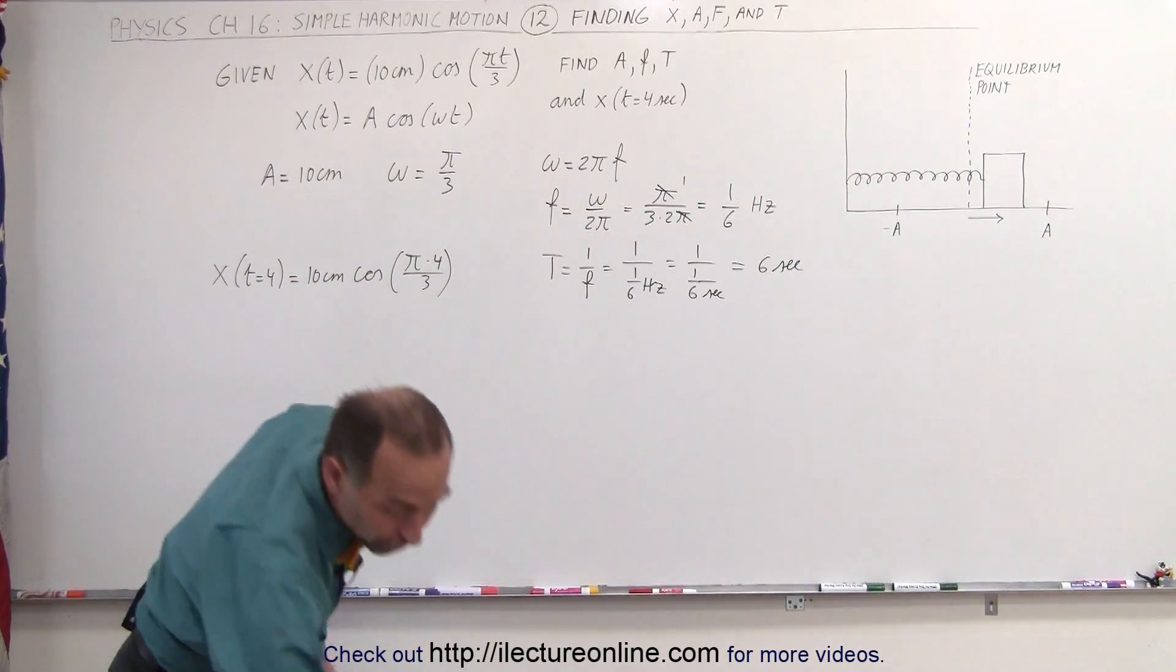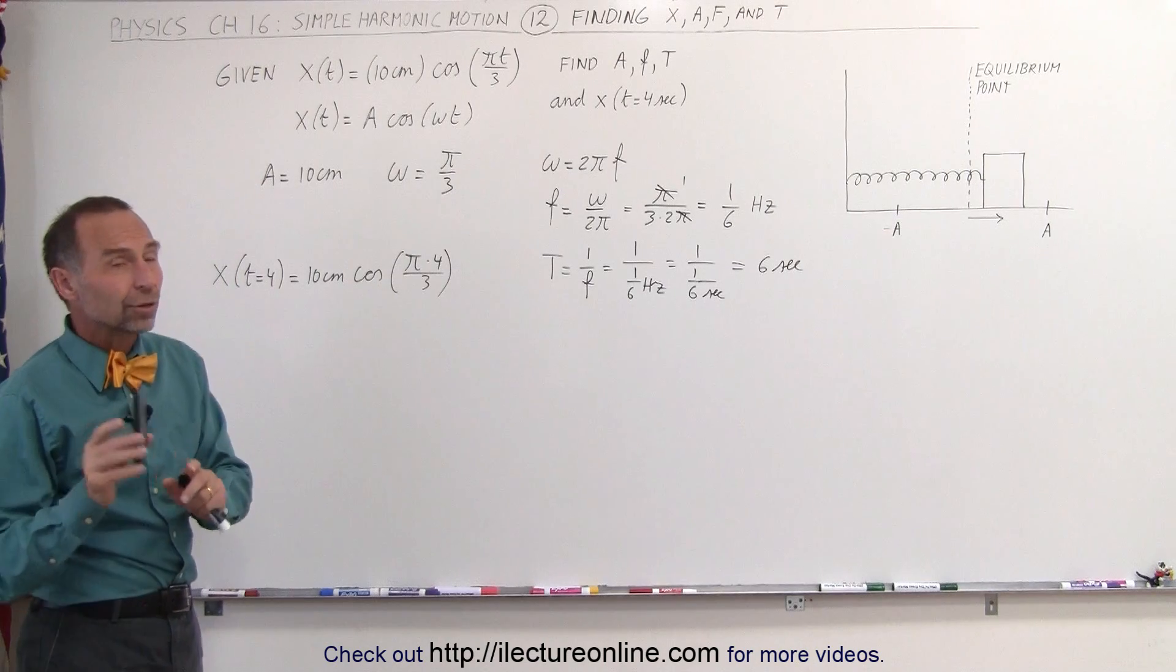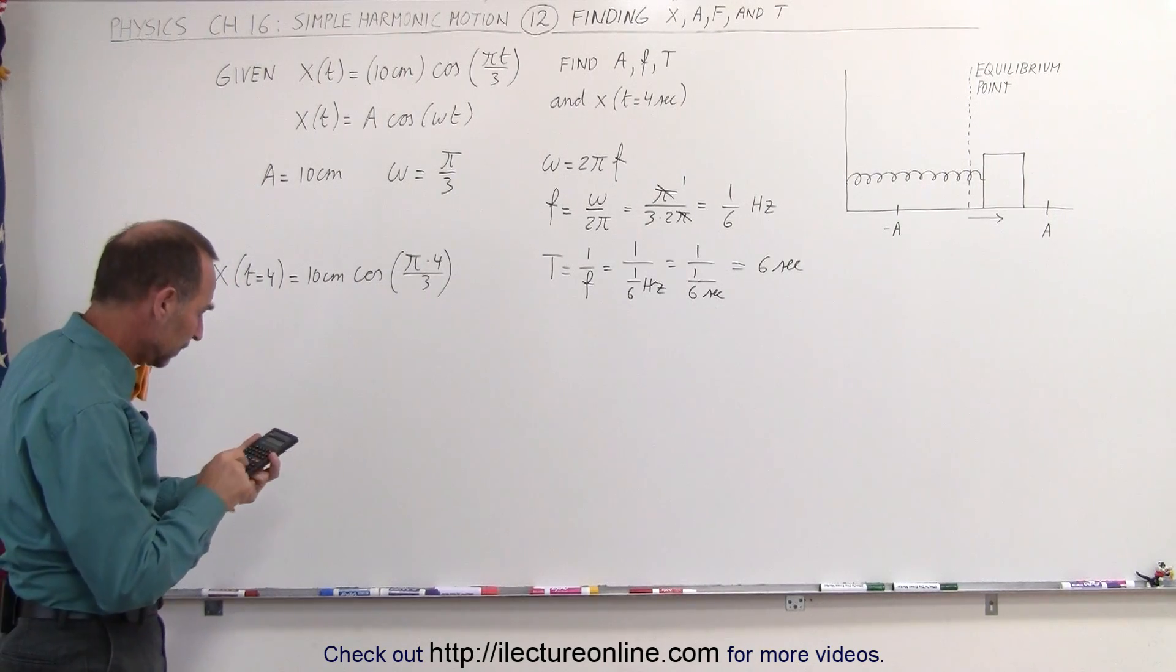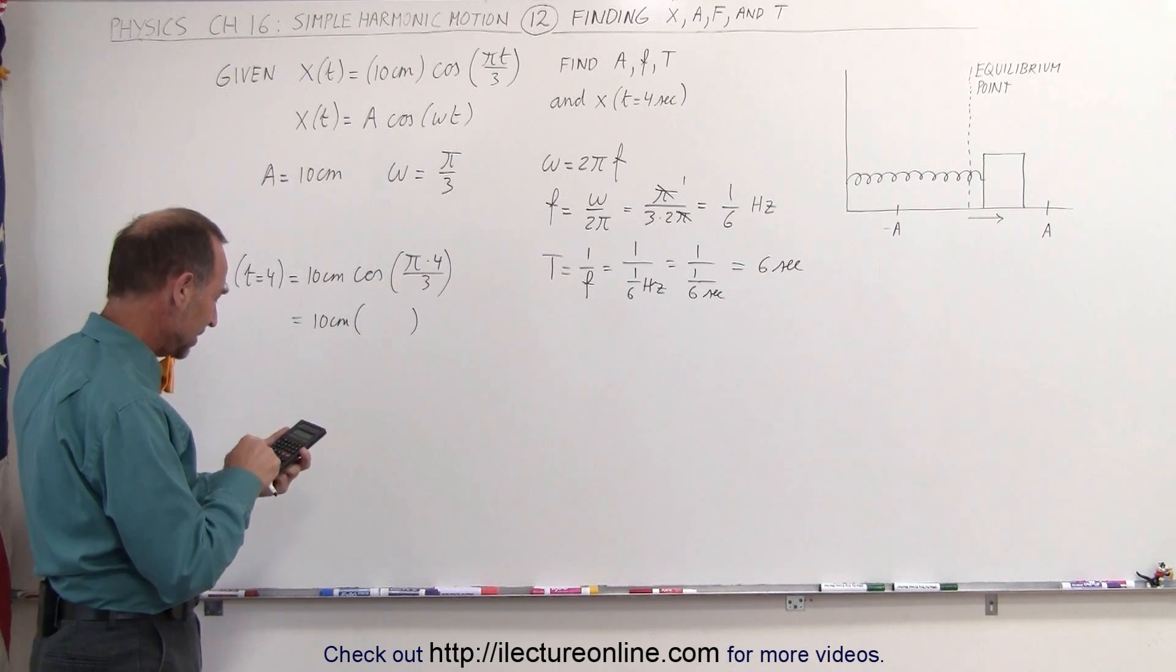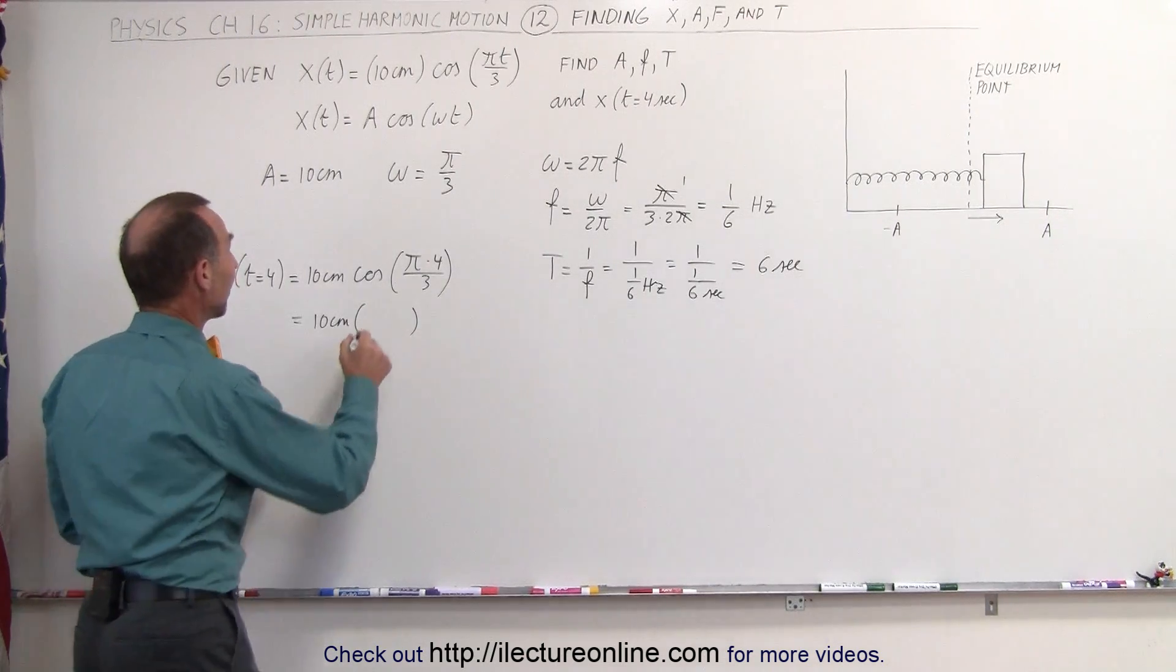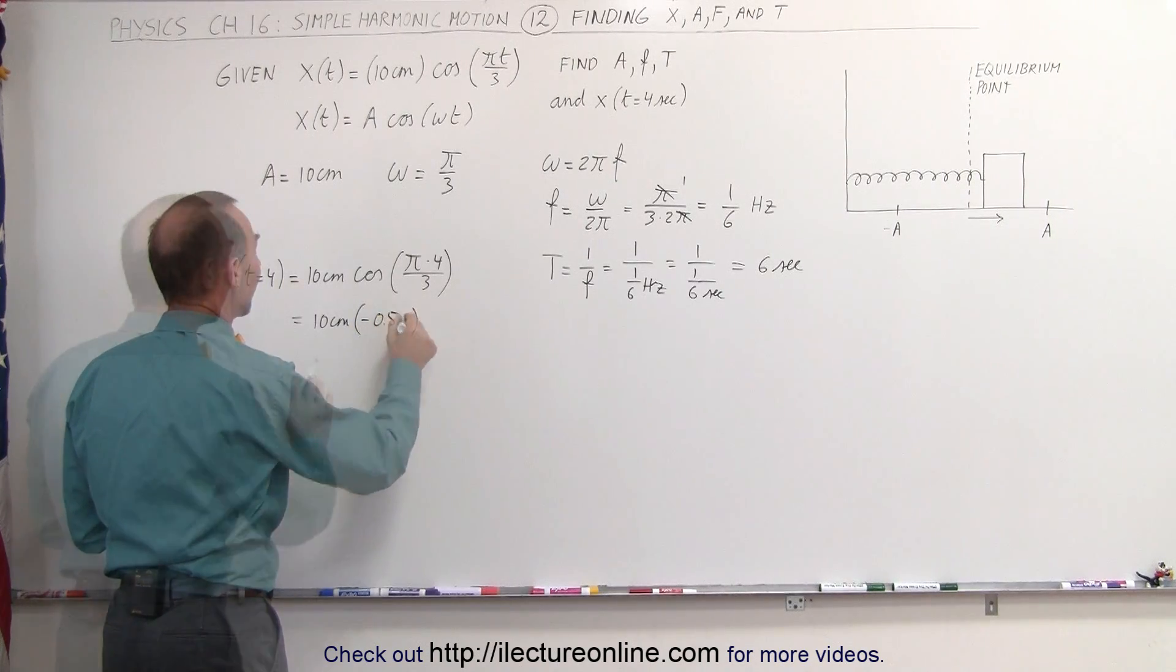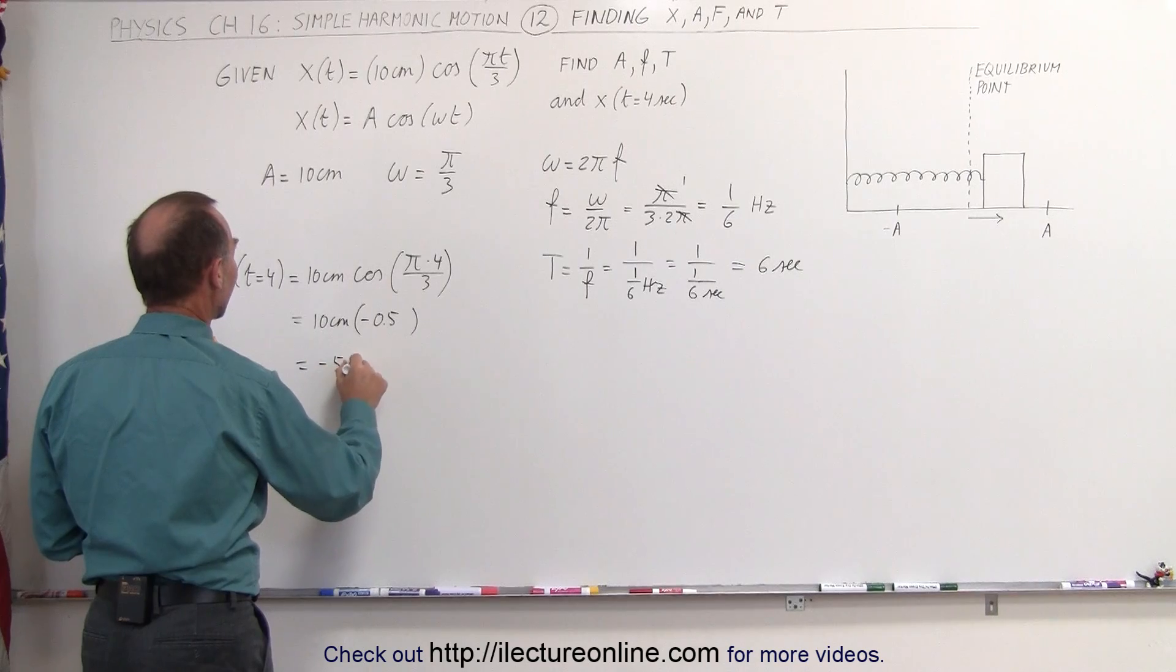Now we need a calculator, and remember when we calculate something like this, the angle here is in radians, so your calculator needs to be in radian mode. We have pi times 4 divided by 3. Now we take the cosine of that, and it's minus 0.5. Therefore we see that x must be equal to minus 5 centimeters.